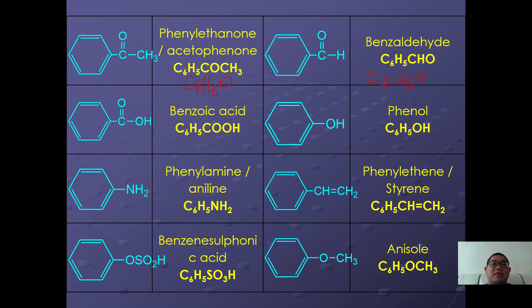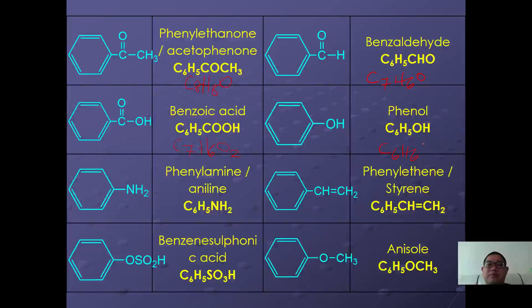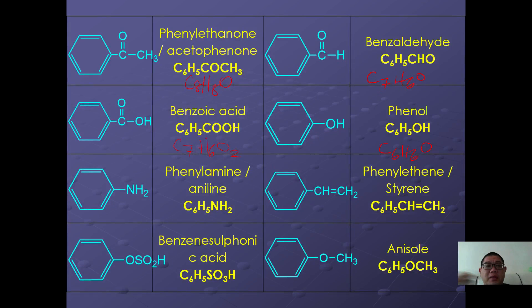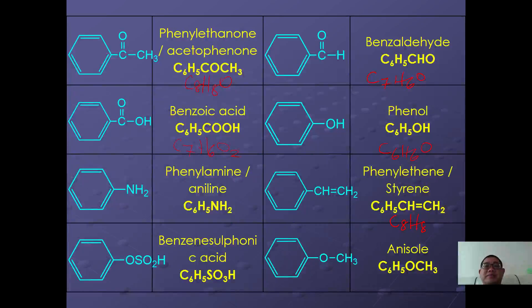Benzoic acid has the formula C6H5COOH, generally written as C7H6O2. Phenol has the general formula C6H5OH, where OH acts as the substituent, giving C6H6O. Phenylamine, also known as aniline, has NH2 as the functional group. Phenylethene, also well known as styrene, has the formula C6H5CH=CH2 or C8H8. Benzene sulfonic acid is a benzene ring with SO3H, also written as C6H5SO3H. Anisole is another example, which is a type of ether.